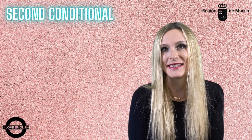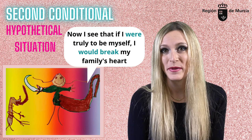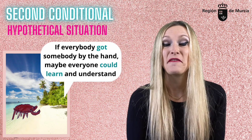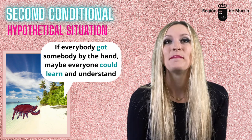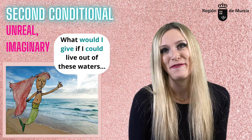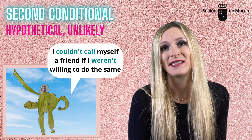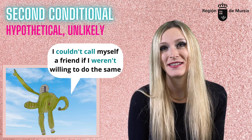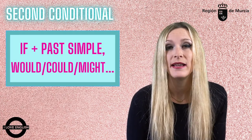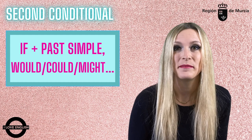They're not quite real — they're, let's say, imaginary. Mulan says: "Now I see that if I were truly to be myself, I would break my family's heart." Or Sebastian: "If everybody got somebody by the hand, maybe everyone could learn and understand." Or Ariel: "What would I give if I could live out of these waters?" Or Buzz Lightyear: "Woody once risked his life to save me. I couldn't call myself a friend if I weren't willing to do the same." So the structure of second conditional is: if + past simple, then would, could or might + bare infinitive.